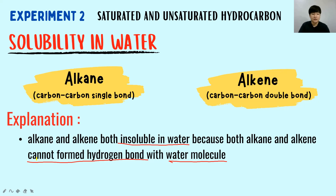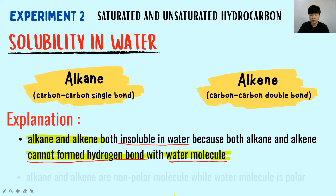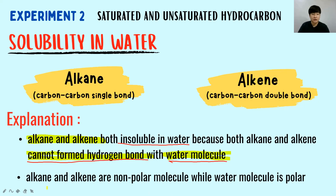Bear in mind, when you say cannot form hydrogen bond, you must also mention the hydrogen bond cannot be formed between who and who — in this case, between alkane/alkene and your water molecule. Why can't alkane and alkene form hydrogen bonds with water? Because alkane and alkene are non-polar molecules, while water is polar.